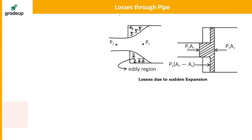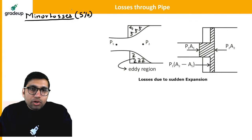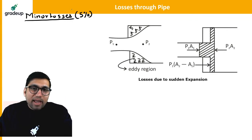Now let us talk about some minor losses. In minor losses, I told you that they account for only 5%. Minor losses basically means the loss due to sudden expansion, loss due to sudden contraction, loss due to entry, and loss due to exit — these are called minor losses.